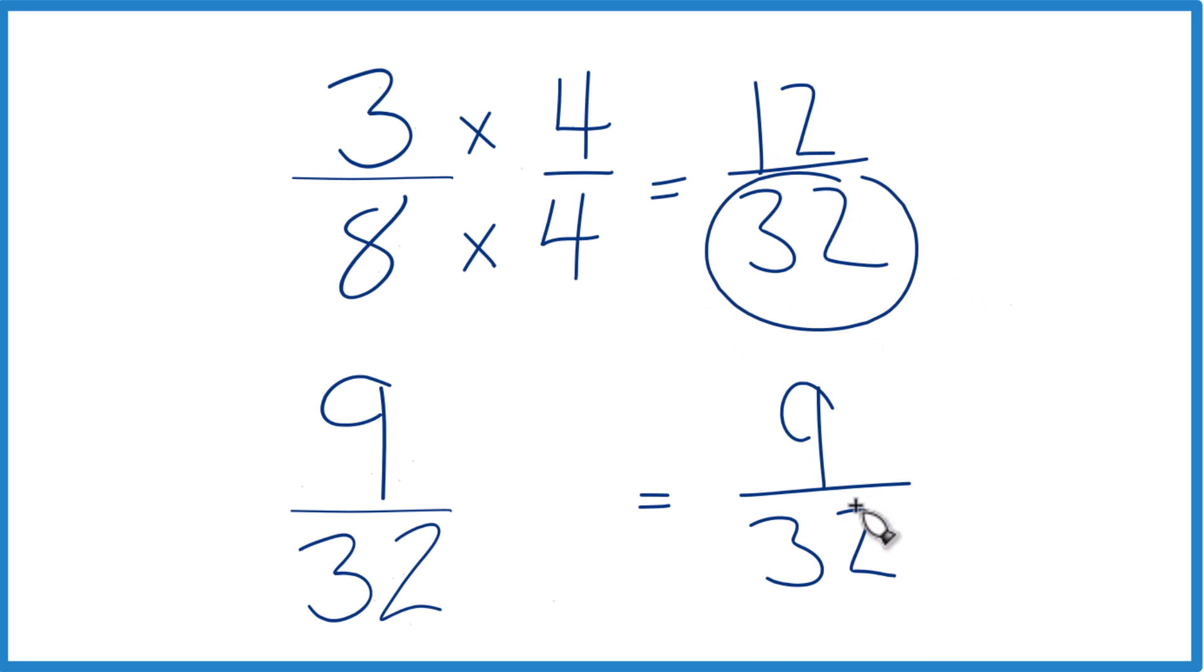Same denominators, just compare the numerators now. 12 is greater than 9, so 12/32 is greater than 9/32.